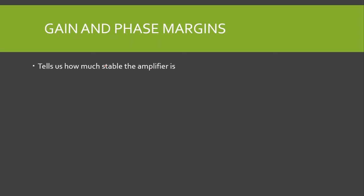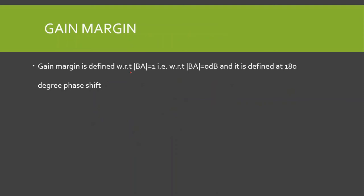Then we have gain and phase margins. Gain and phase margins tell us how much stable the feedback amplifier is. For example, if one feedback amplifier has loop gain magnitude of 0.95 and another has 0.7, both are stable, but the amplifier with 0.7 is more stable than the one with 0.95 because the 0.95 amplifier is relatively close to instability. This is clarified by the gain and phase margins. Gain margin is defined with respect to beta-A equal to 1, that is with respect to loop gain equal to 1.